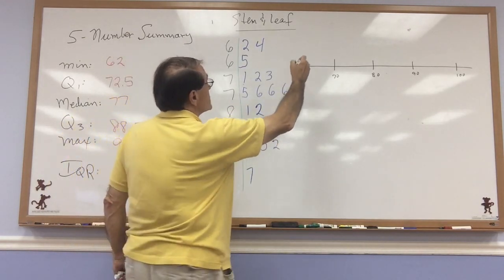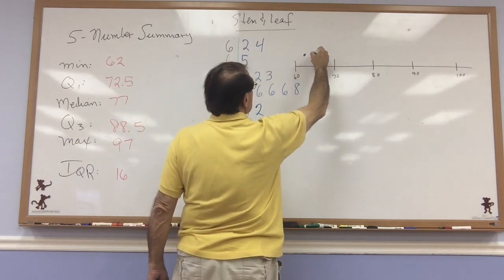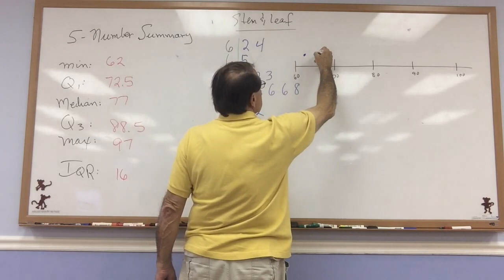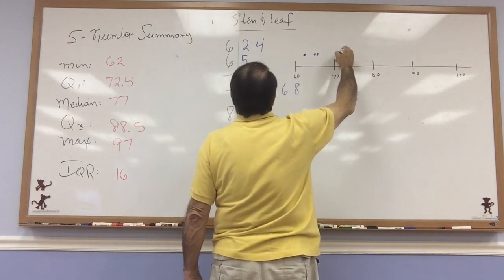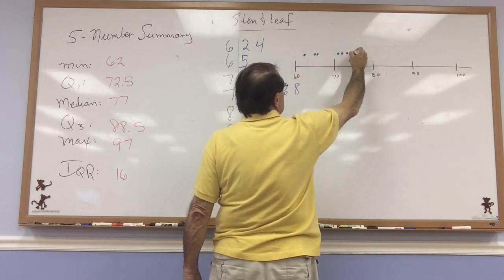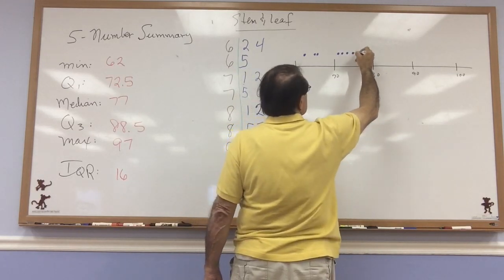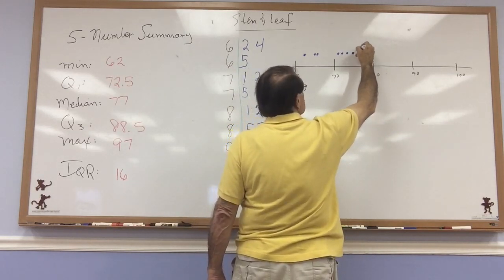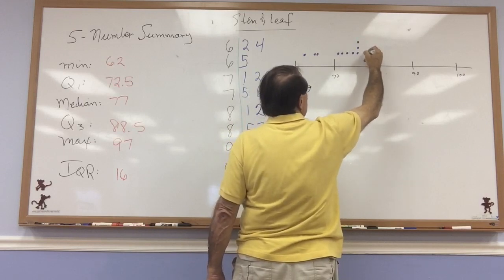So I've got a 62, I've got a 64, I've got a 65. Okay, we come up to a 71, a 72, a 73, a 75. And I have three 76s. So one, see I'm going above, two and three, and a 78.